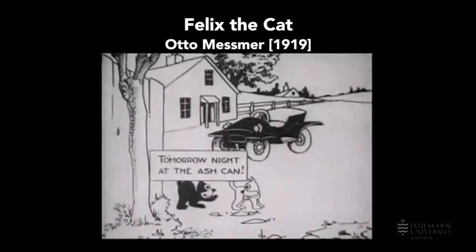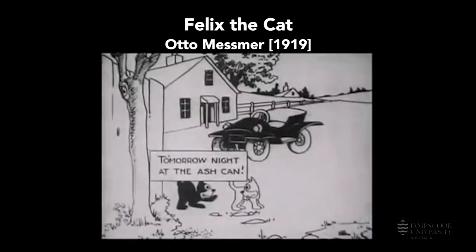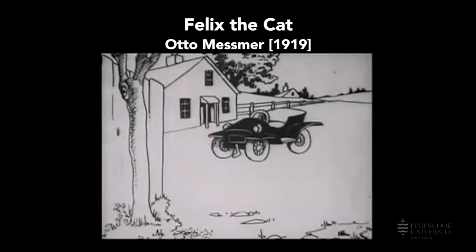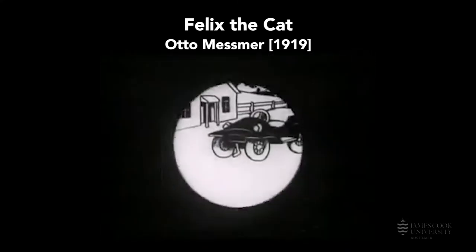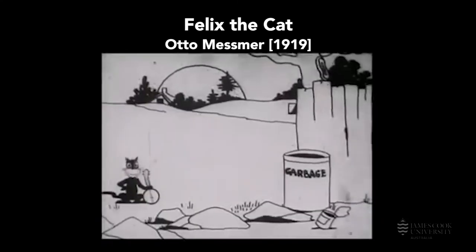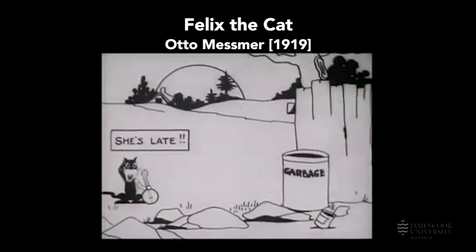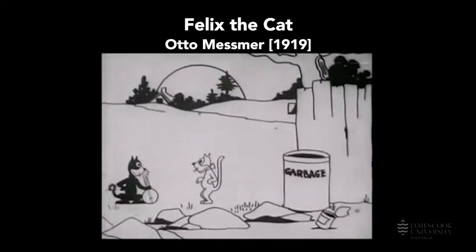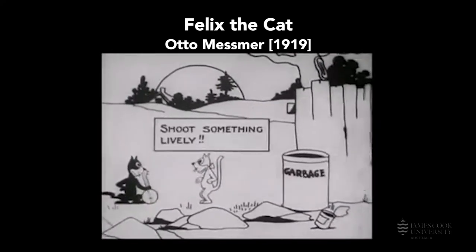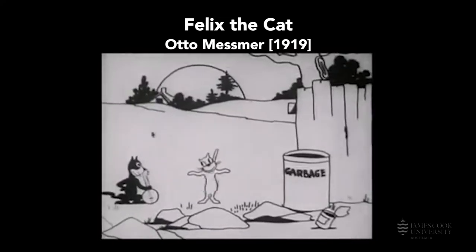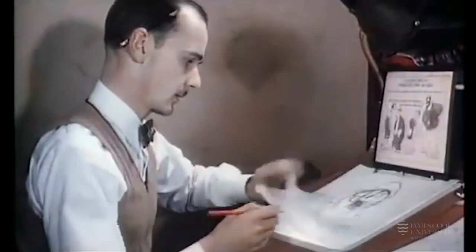There's also an early Australian connection to the cell animation scene, which is Felix the Cat from 1919. The Australian cartoonist and animator Pat Sullivan translated his newspaper comic character of Felix the Cat into the very first animated character with an identifiable screen personality, predating Mickey Mouse by a couple of years.